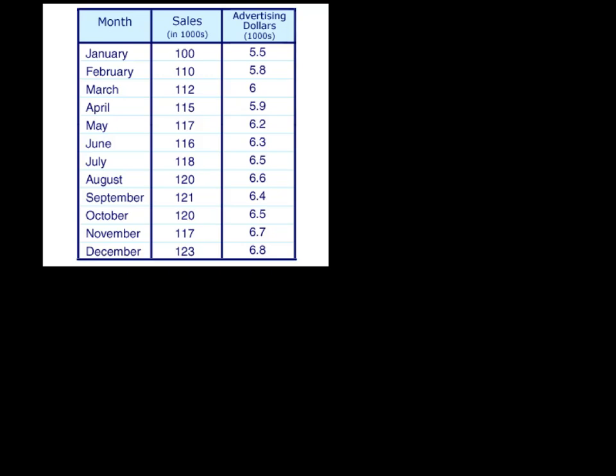Chapter 9 is all about correlations, which are basically connections between two types of measurements. They're two quantitative measurements, like in this example, sales in thousands of dollars and advertising dollars spent, also in thousands. You want to see if there's a connection between those things, and that's what Chapter 9 is all about.